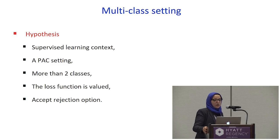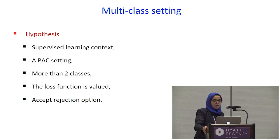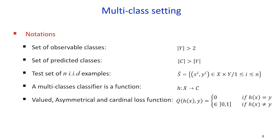In our multi-class setting, we adopt the following hypotheses. First, we are in a supervised learning context. Throughout this work, we adopt the PAC setting where each example is drawn according to a fixed but unknown probability distribution. The loss function is valued and we accept the rejection option. In our multi-class setting, we have two sets of classes: the observable classes in the training set, and the predicted classes with the added class 'unclassified.' We also have the set of IID examples and our asymmetric valued loss function Q. With this loss function, we can define the generalization risk as the expected value of the loss function according to the unknown distribution.